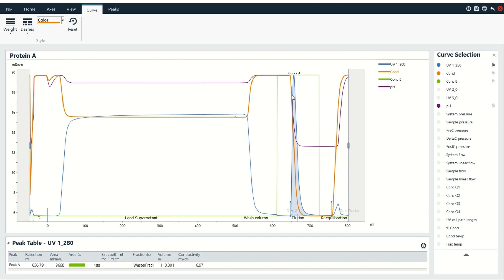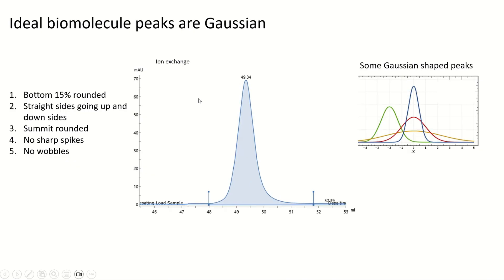I also wanted to talk about peak shape and maybe some of the things you're looking at. Someone might ask you, what's this peak down here — is that also your target protein? Before we talk about what can make a peak look funny, let's talk about what an ideal biomolecule peak should look like. It should be Gaussian — basically the lower 15 or 20 percent here should be curved like a bell curve shape. The sides on the left and right are straight more or less, and then the peak at the top is also curved. Here we're doing an ion exchange run, so this is a pretty even, symmetric peak on both sides, which is great. A true Gaussian peak is perfectly symmetric on both sides — it doesn't have any wobbles and it doesn't have any sharp peaks.